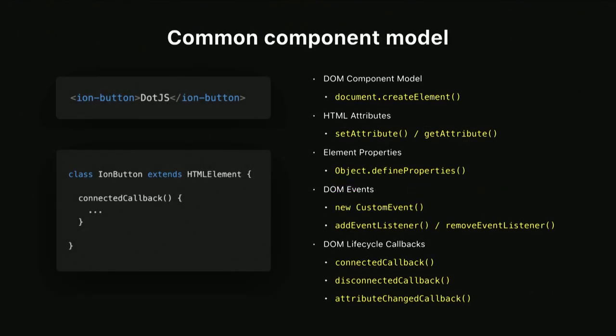First, we needed to decide on the component model Ionic would be built with, which brought us to the low-level API called custom elements. Ionic extends a browser's HTML element, and because of that we're able to take advantage of existing browser APIs such as connected callback. With these features, Ionic components are able to manage themselves. The JavaScript class syntax is written in stone — that's not something that's going to change. And beyond that, we purposely restrict our components to only use APIs that are provided by the browser.